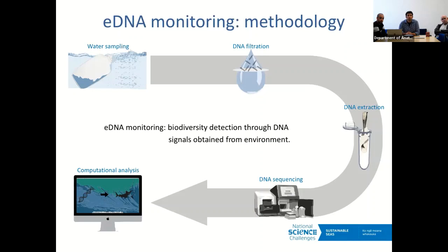You take a water sample — it's as easy as it looks. You take a clean, DNA-free bottle, dip it into water, and collect the water. Then you run it through a filter that will collect any DNA in the water. It can be free DNA, DNA in cells, or even entire organisms small enough to fit through the bottle and onto the filter.